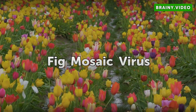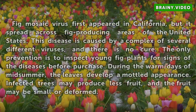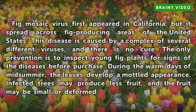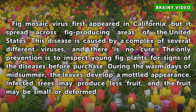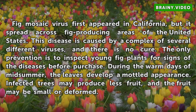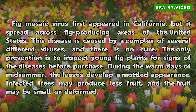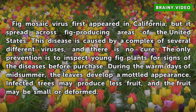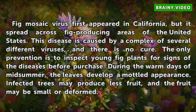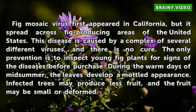Fig mosaic virus first appeared in California, but it spread across fig-producing areas of the United States. This disease is caused by a complex of several different viruses, and there is no cure. The only prevention is to inspect young fig plants for signs of the disease before purchase. During the warm days of midsummer, the leaves develop a mottled appearance. Infected trees may produce less fruit, and the fruit may be small or deformed.